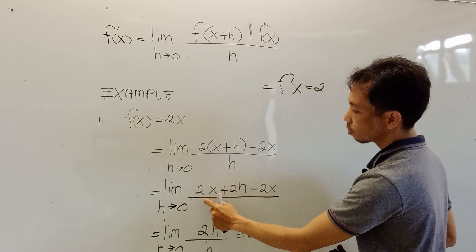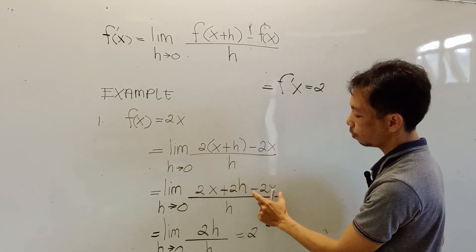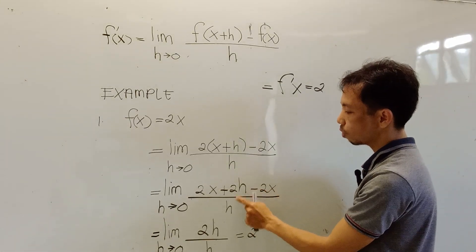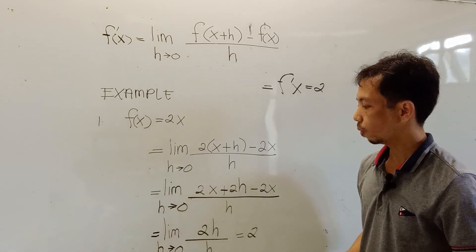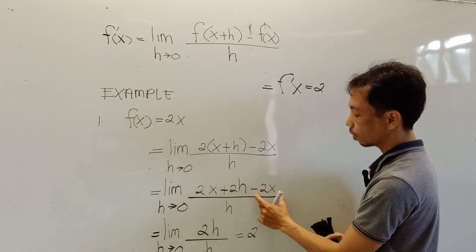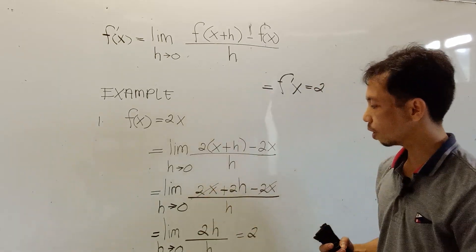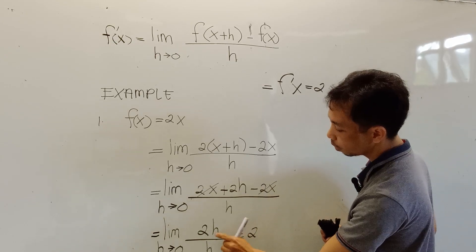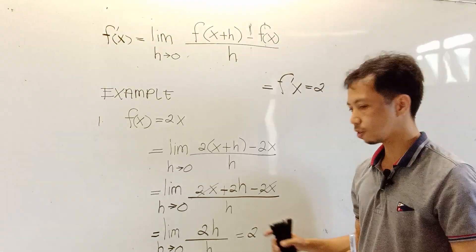2 times x is 2x. 2 times h is 2h. Then copy this one, the function, the value of the function. Minus 2x all over h. Just copy the h. This h approaches 0. We can simplify this one. If you notice, we have positive 2x and negative 2x. So we can cancel out this one. So what's left is positive 2h all over h. Then we can further simplify this one.